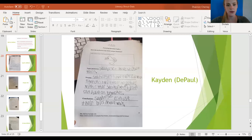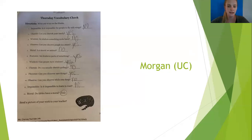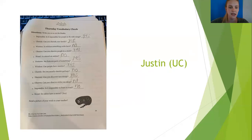First off, we have Caden in DePaul. Way to go, Caden. Look at his complete sentences. He even circled his article that tagged his noun. Quite impressed, Caden, very nice job. Morgan in UC, let's give Morgan two claps and two more. Nice job with your vocabulary, Morgan. And you too, Justin in UC.